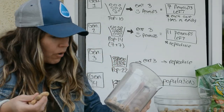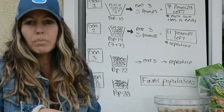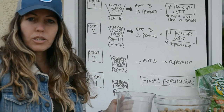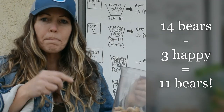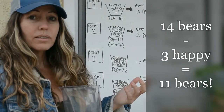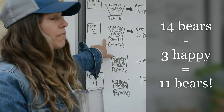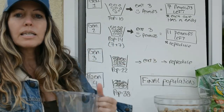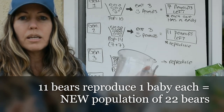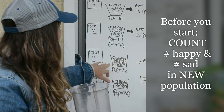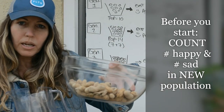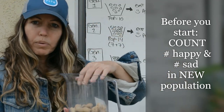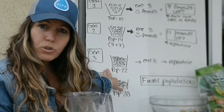Those three eaten bears are removed, and 14 minus 3 equals 11 left. These 11 now reproduce, so 11 plus 11 is 22. You now have a new population of 22 — reach into your original supplies and add 11 more into the population randomly.